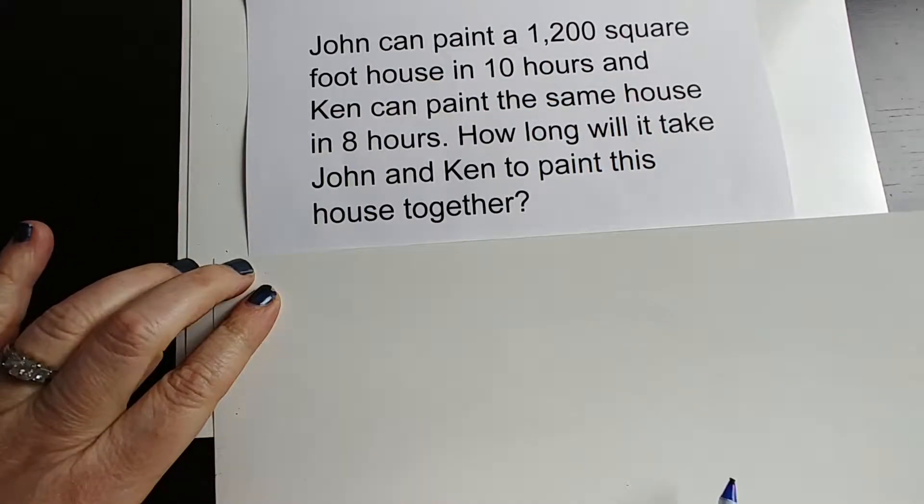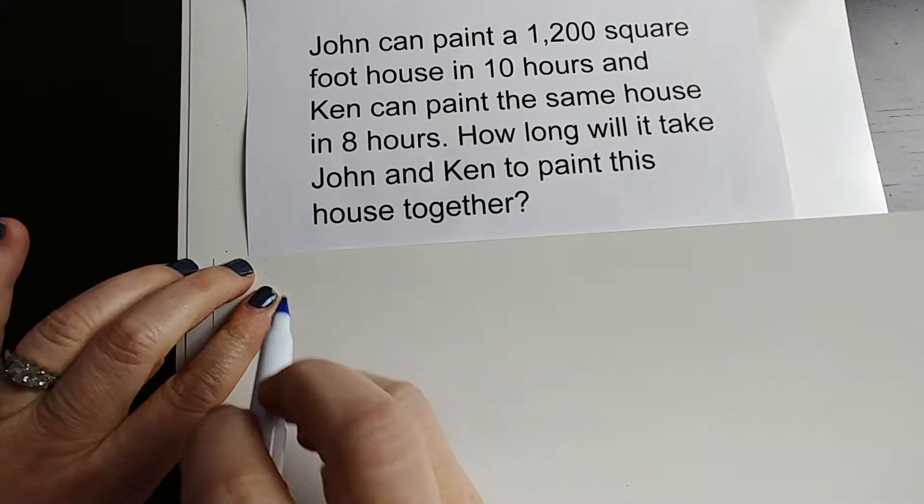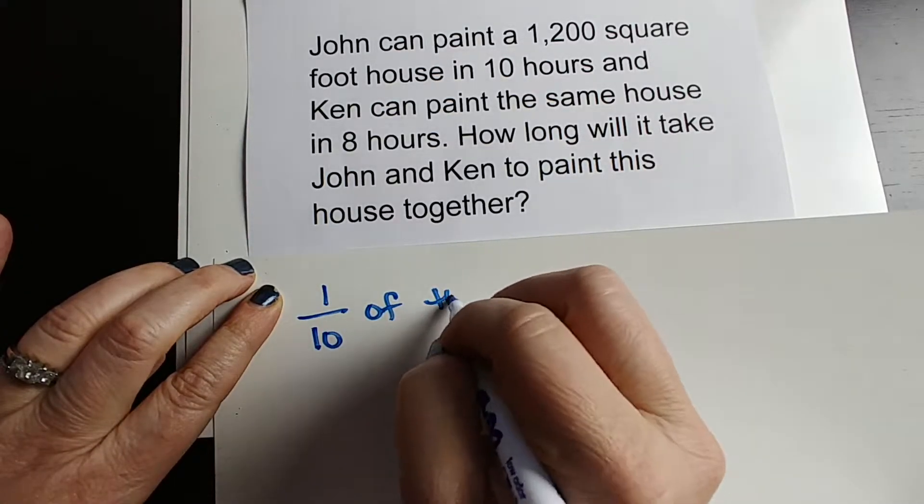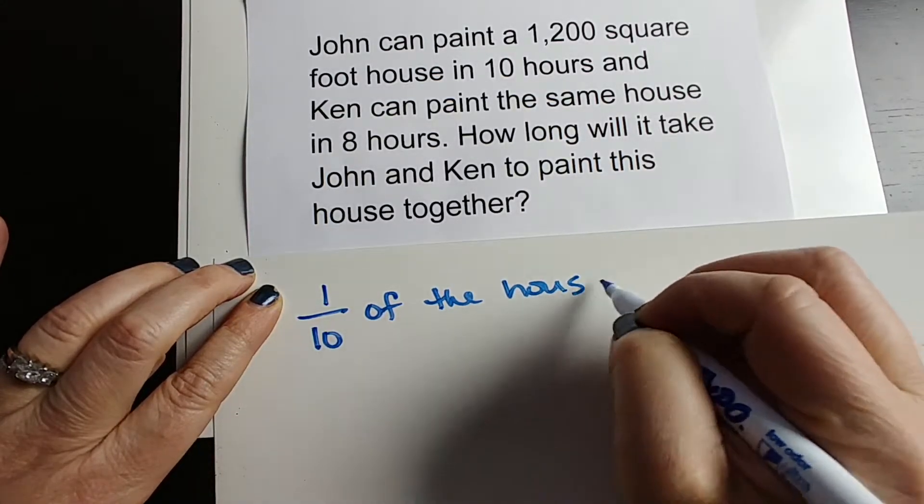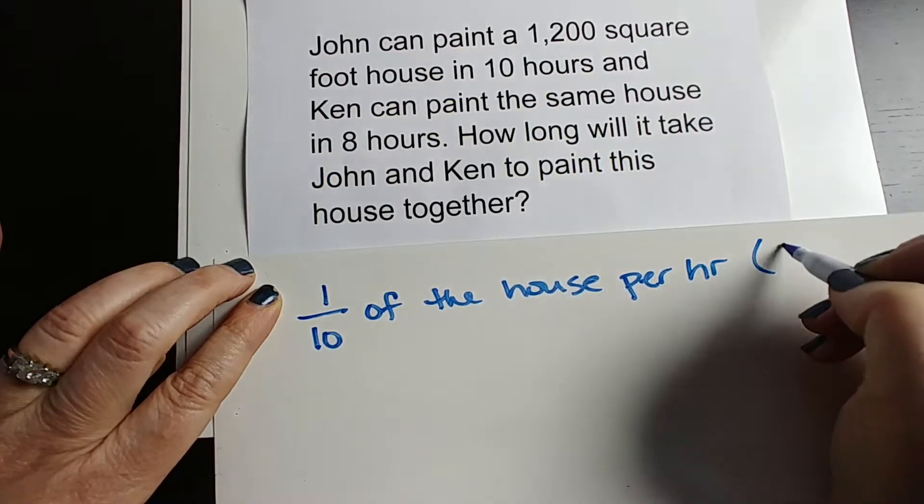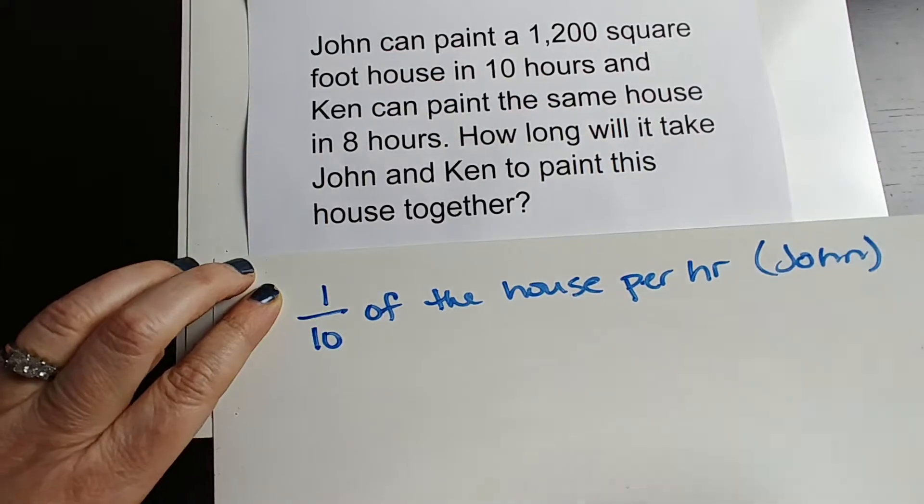If John can paint a house in 10 hours, then in 1 hour John can paint 1 tenth of the house per hour. That's how much work he does per hour. And we should probably say that this is John.